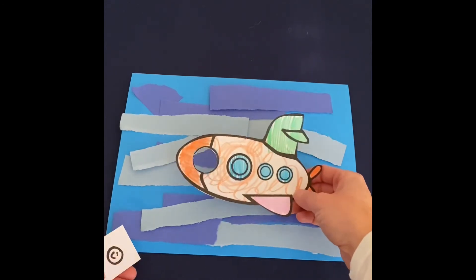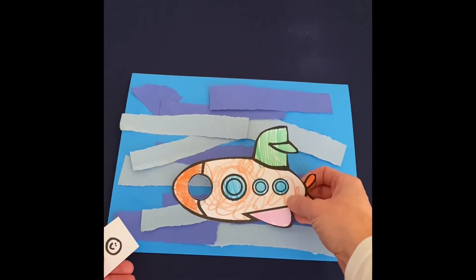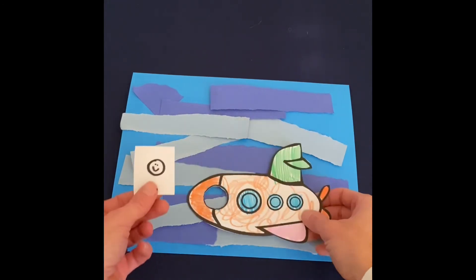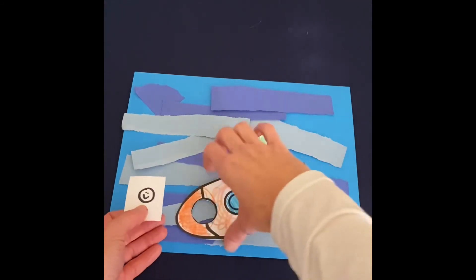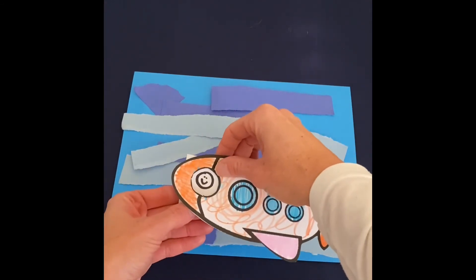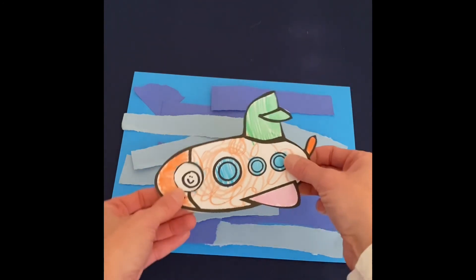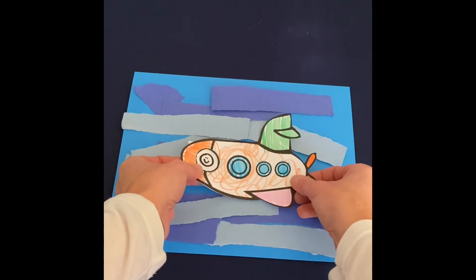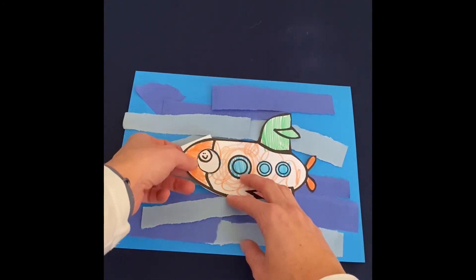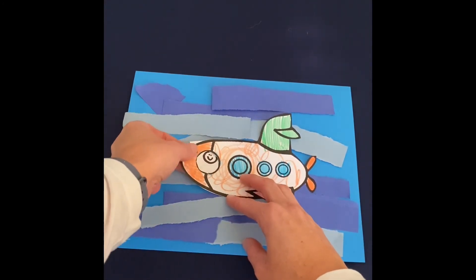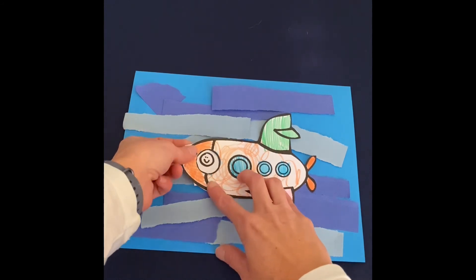This last part is completely optional, but if you wanted to, you can print out a little picture with your child's face on it, cut it out - it doesn't have to be on even photo paper, just print it on printer paper - and you can stick them in there and they can be driving the submarine. That's kind of fun. Kids like to see themselves in their artwork. But again, that part's completely optional.